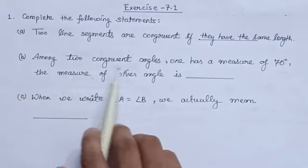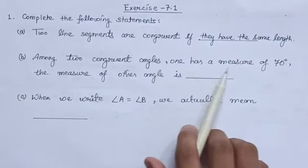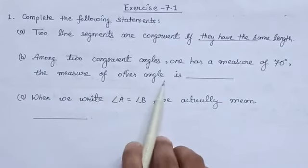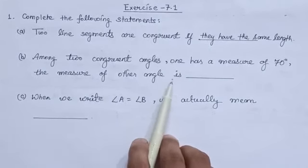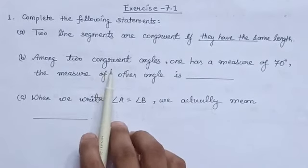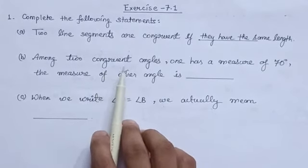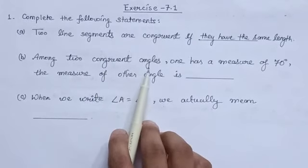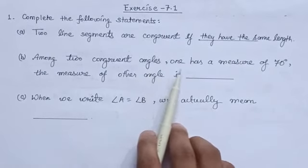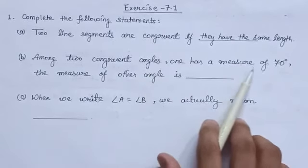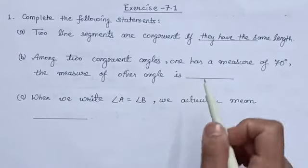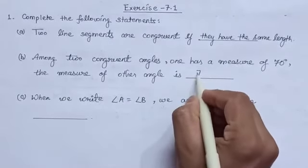The next statement is: among two congruent angles, one has the measure of 70 degrees; the measure of the other angle is — it is given that the two angles are congruent. You know the condition for congruency of two angles is that these two angles must have the same measure. So if one has a measure of 70 degrees, then the measure of the other angle must also be 70 degrees.